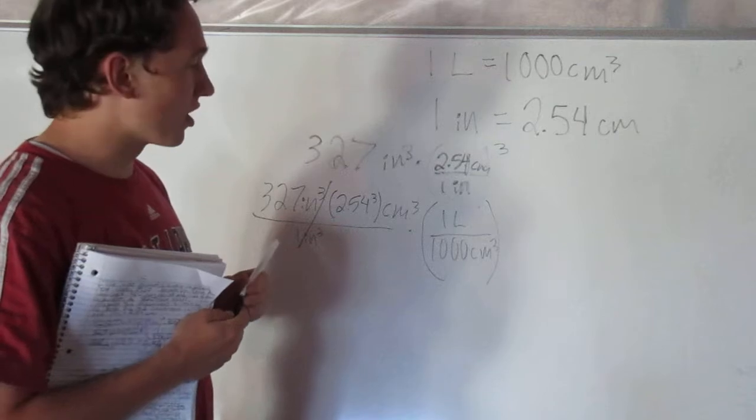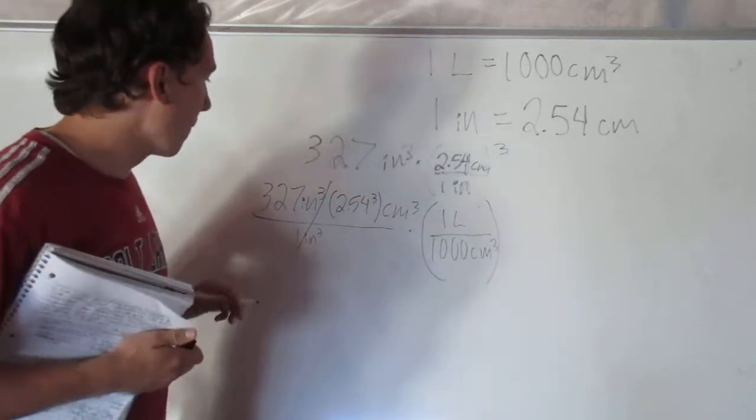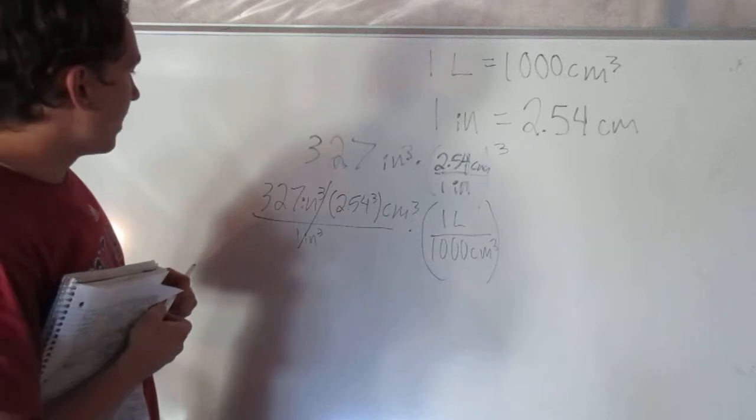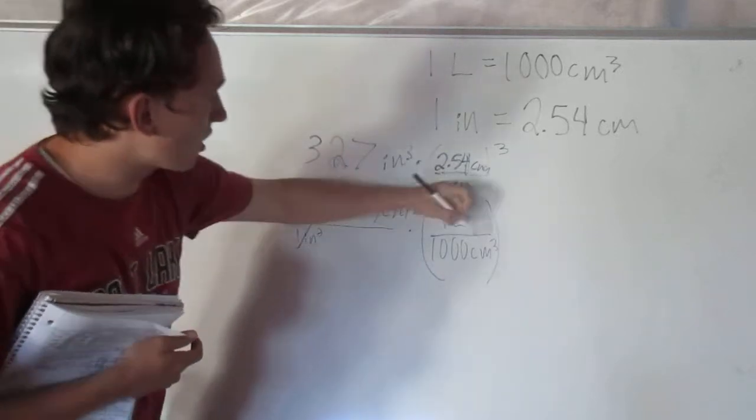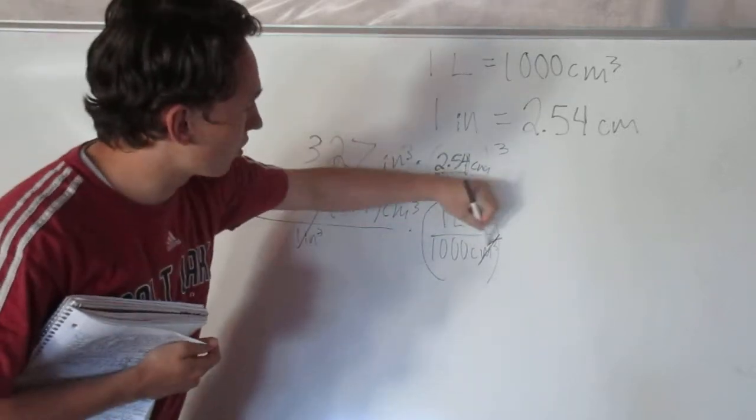And 1 liter on the top, because those two—the numerator and denominator—are equal. So we can do that. And now if we do that, obviously these are going to cancel out our units there.